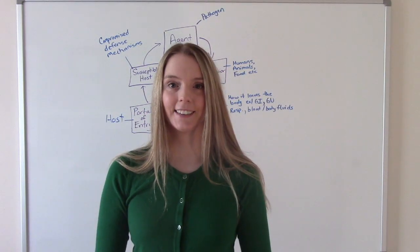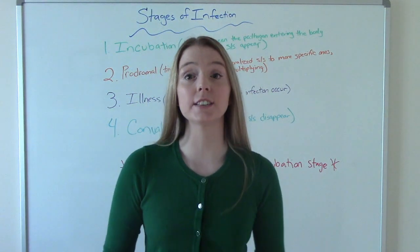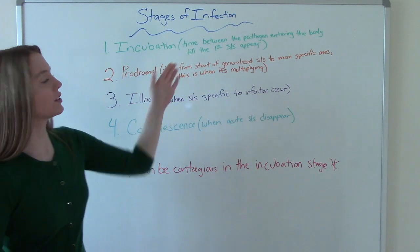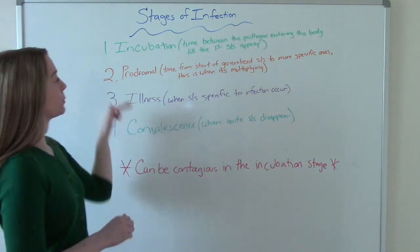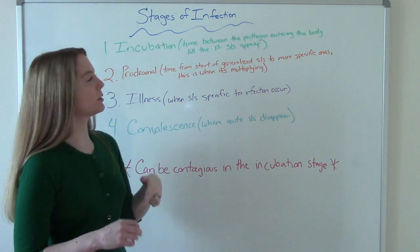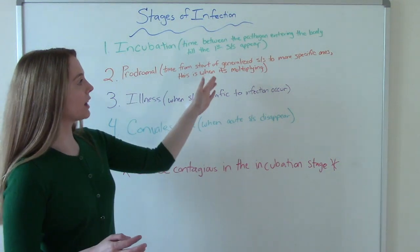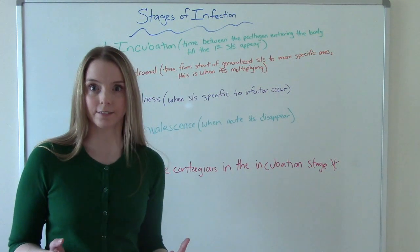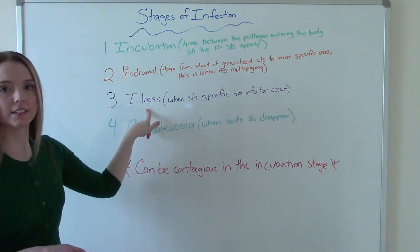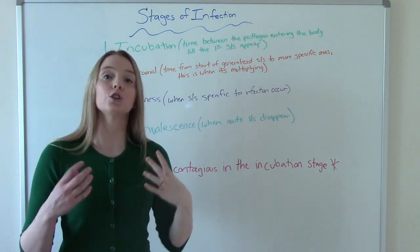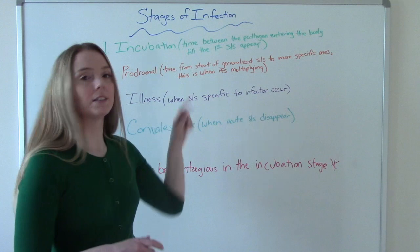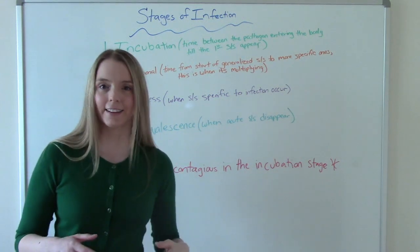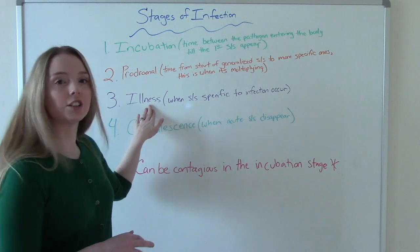Now let's talk about the stages of infection. Our first stage is the incubation stage. What happens during the incubation stage is the pathogen enters the body and we, the host, start feeling those first initial signs and symptoms. Moving on to the prodromal stage, we have our first signs and symptoms that are probably pretty generalized, but in this stage they go from generalized to more specific. What's happening in your body is the pathogen is multiplying. Then we get to the third stage, the illness stage. This is when we have specific signs and symptoms to an infection, and this is usually when people start seeking medical treatment.